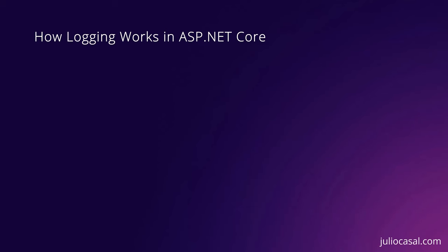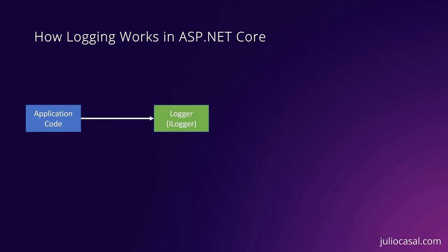In ASP.NET Core, anytime your application needs to log any kind of information, it can make use of logger objects, which you'll declare in your code via the ILogger interface. These logger objects are automatically registered for you during your application startup sequence, so you are free to inject them and use them in any of your microservice classes without any additional configuration. You can use the many methods of the logger object to log events with different levels of severity, like informational events, warning events, error events, and many others, according to the needs of your service.